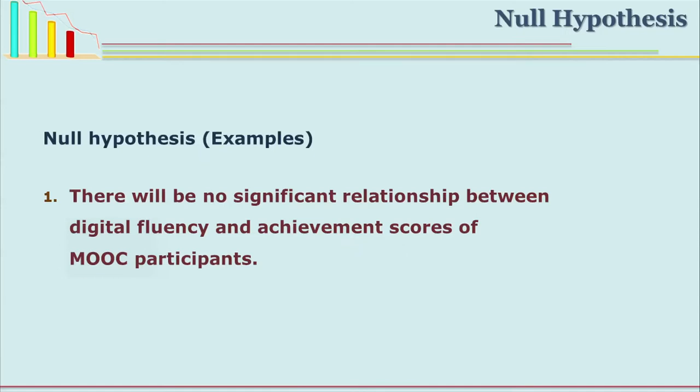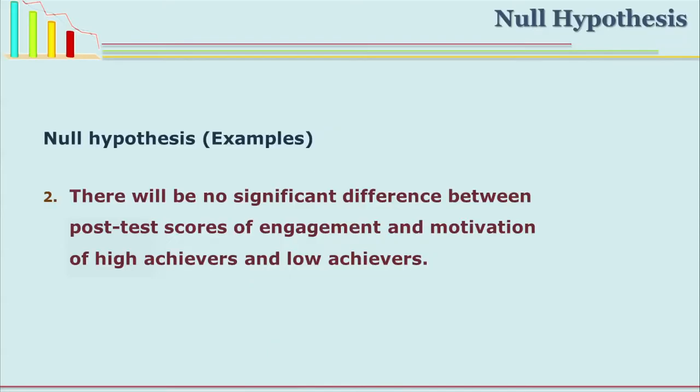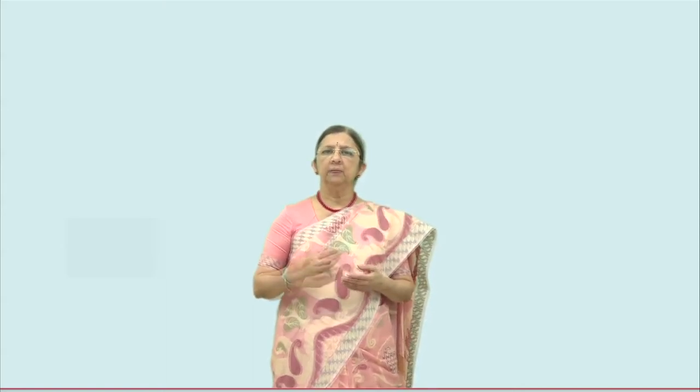We will see some examples of null hypotheses and how they are stated. First: 'There will be no significant relationship between digital fluency and achievement scores of MOOC participants.' This null hypothesis is about relationship, not difference, so you use a different statistic, for example coefficient of correlation, to find out whether this null hypothesis can be rejected or retained. Another example: 'There will be no significant difference between post-test scores of engagement and motivation of high achievers and low achievers.' The researcher uses certain statistics to try to reject that null hypothesis.